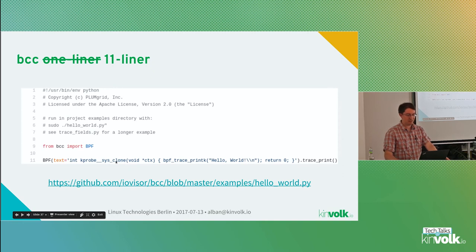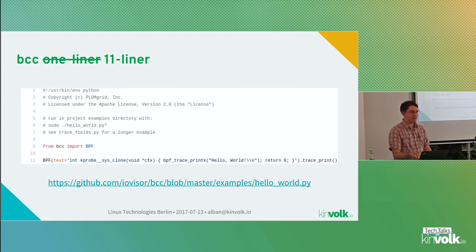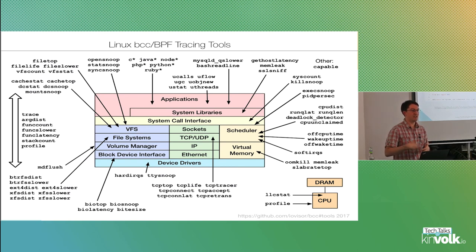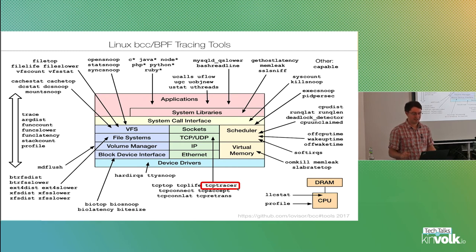Every time the clone syscall is called, it will do a printk to a buffer that will be printed in Python. That looks not too difficult, but of course there are a lot more complex things you can do with eBPF. This Python program will compile the C code just-in-time into BPF bytecode and send it to the kernel. With BCC there are a lot of tools developed to inspect what's happening in the kernel on different subsystems — on the virtual file system, networks, etc. Here is one of them: TCP tracer, developed by Iago.